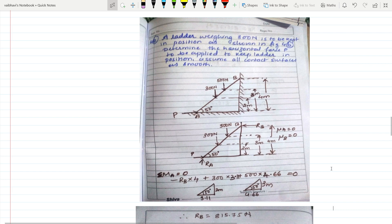I have represented two downward forces: 300 N and 500 N. You get only Ra and Rb. Given the distances at which these vertical forces act from point A, I found the horizontal distances. The angle given is 50°. The vertical distance is 2 m for the 300 N force, giving a horizontal distance of 3.11 m. For the 500 N force, this distance is 4.66 m.